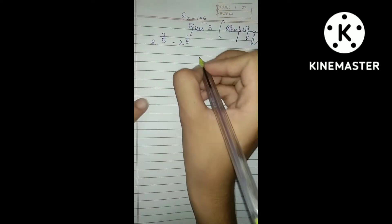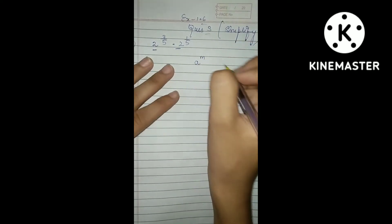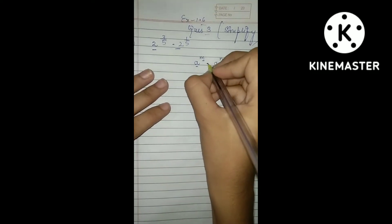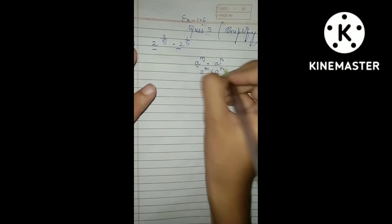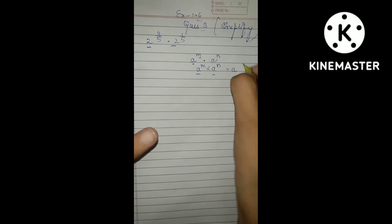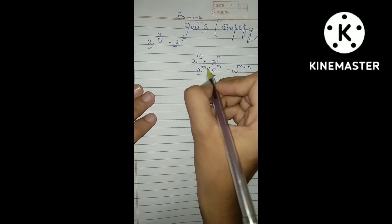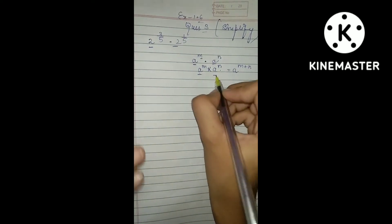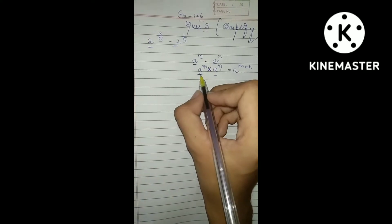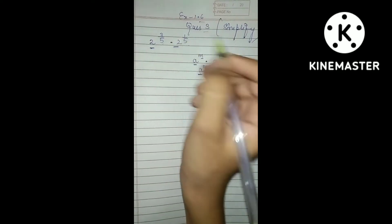First of all we need to understand this question. If your base is the same — let's suppose your base is 'a' raised to the power m, where 'a' is the base and m is the power or exponent — and the dot means multiply. When the base is the same and you multiply, then your powers will be added (plus). This applies only when base is the same and operation is multiplication.